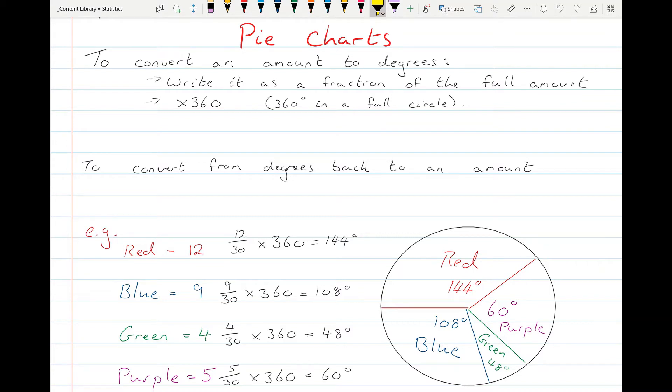Pie charts are a very common way of displaying data where they use a circle and then divide it up into different sectors.